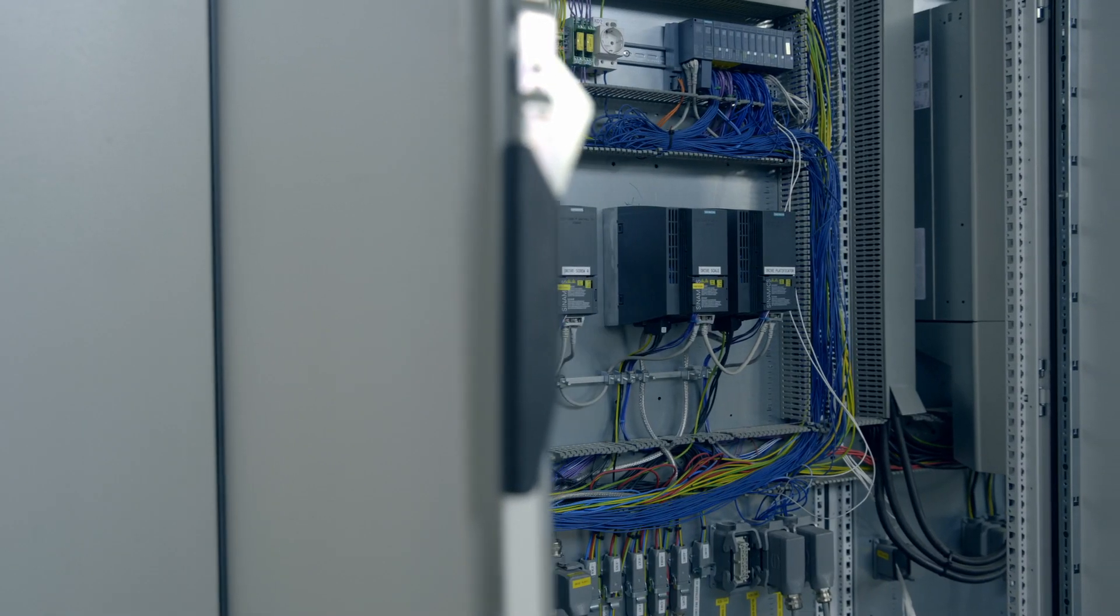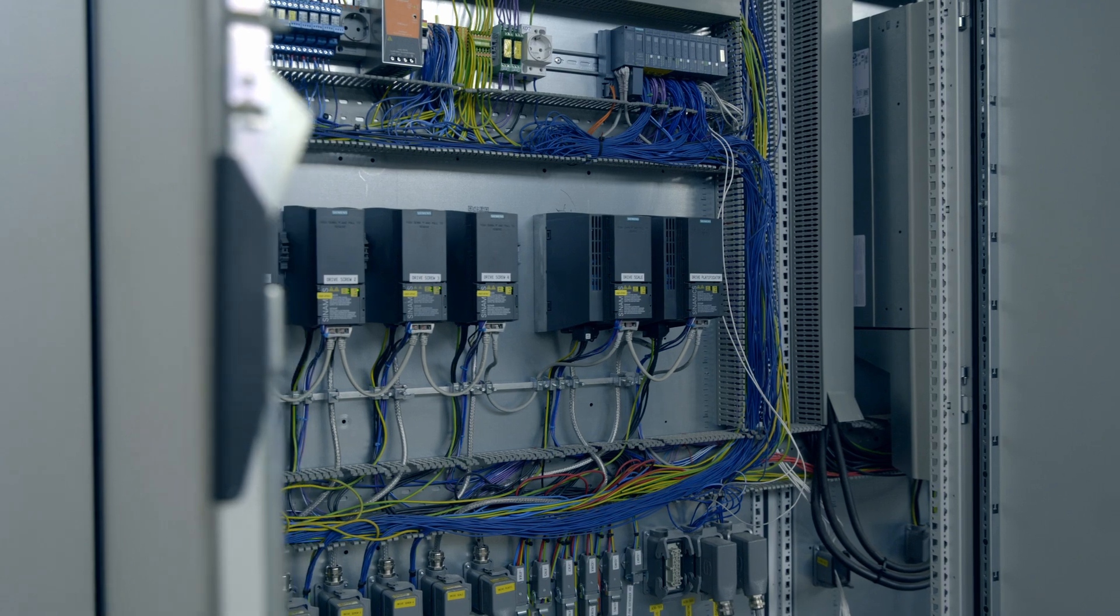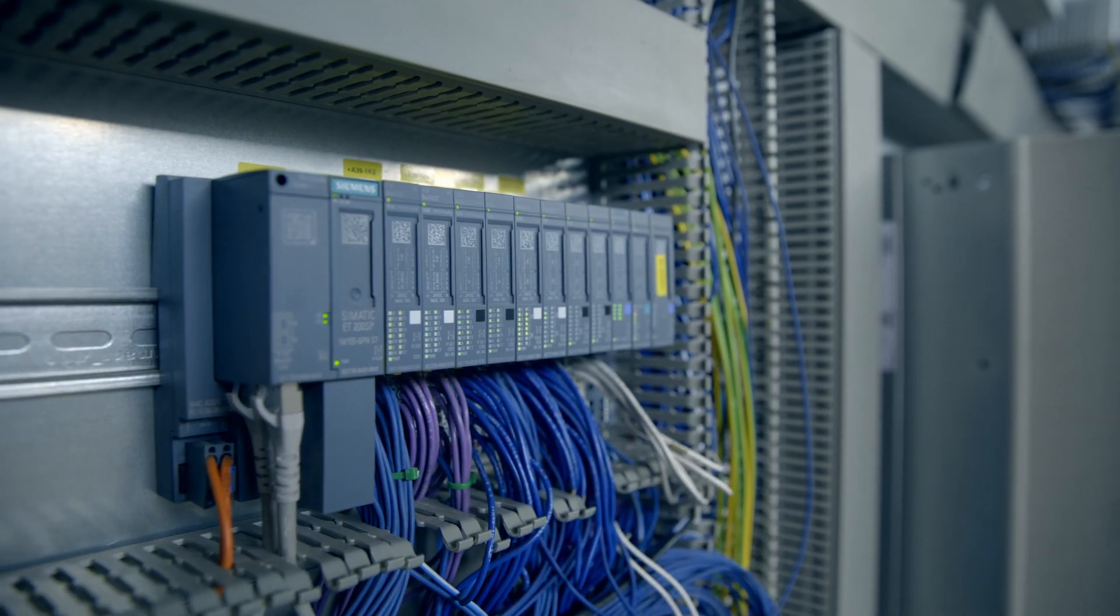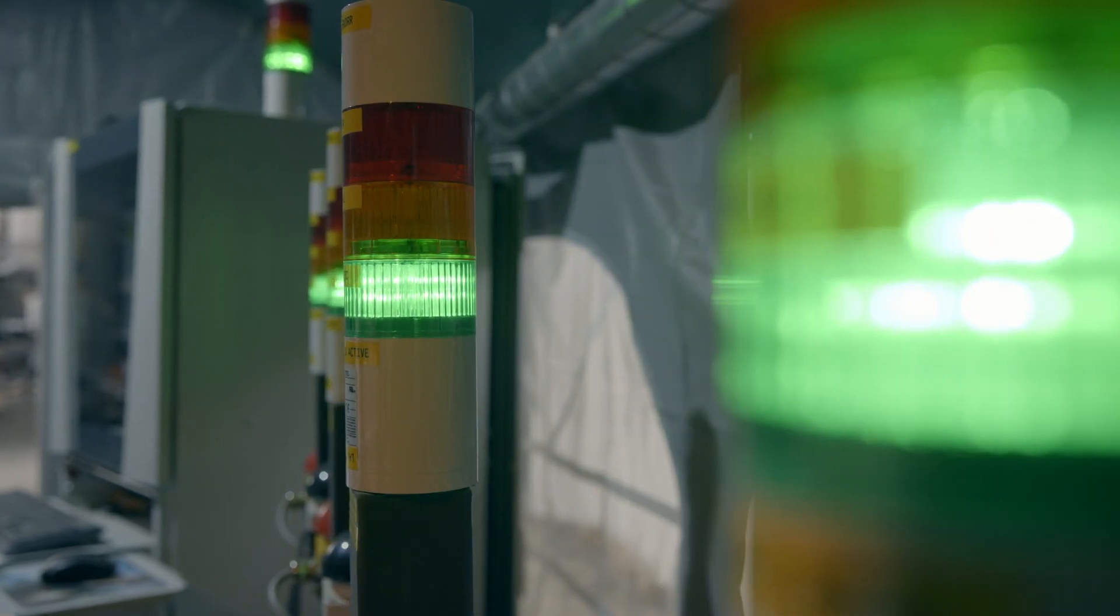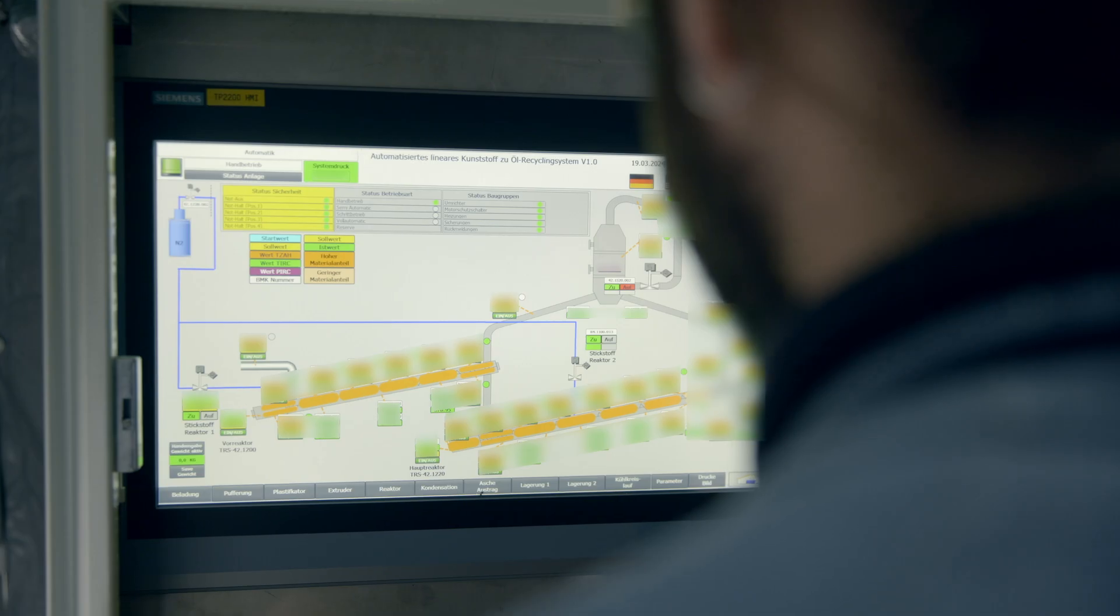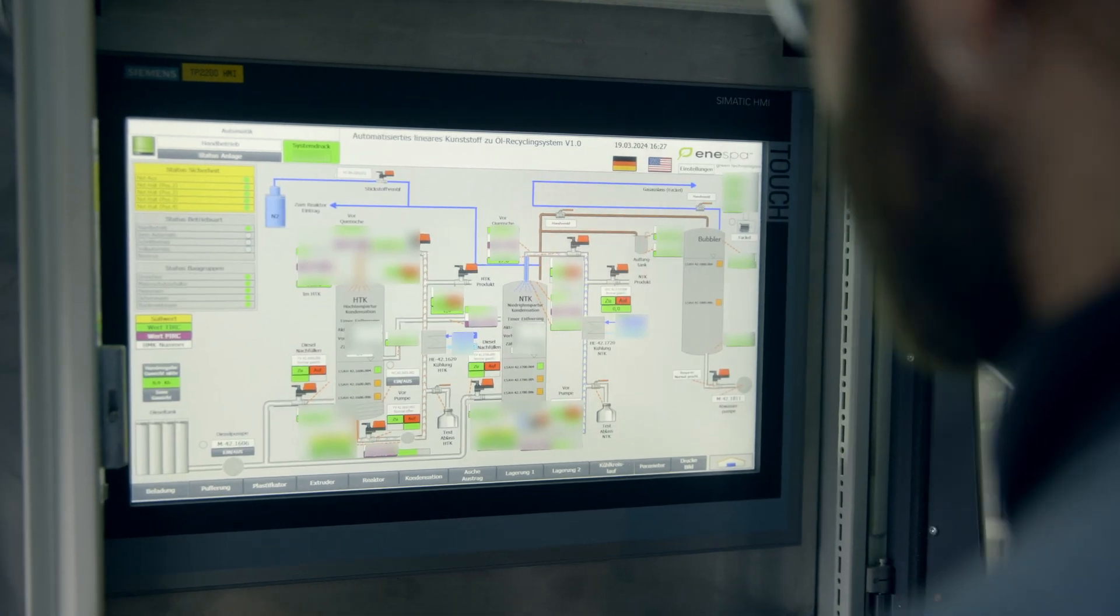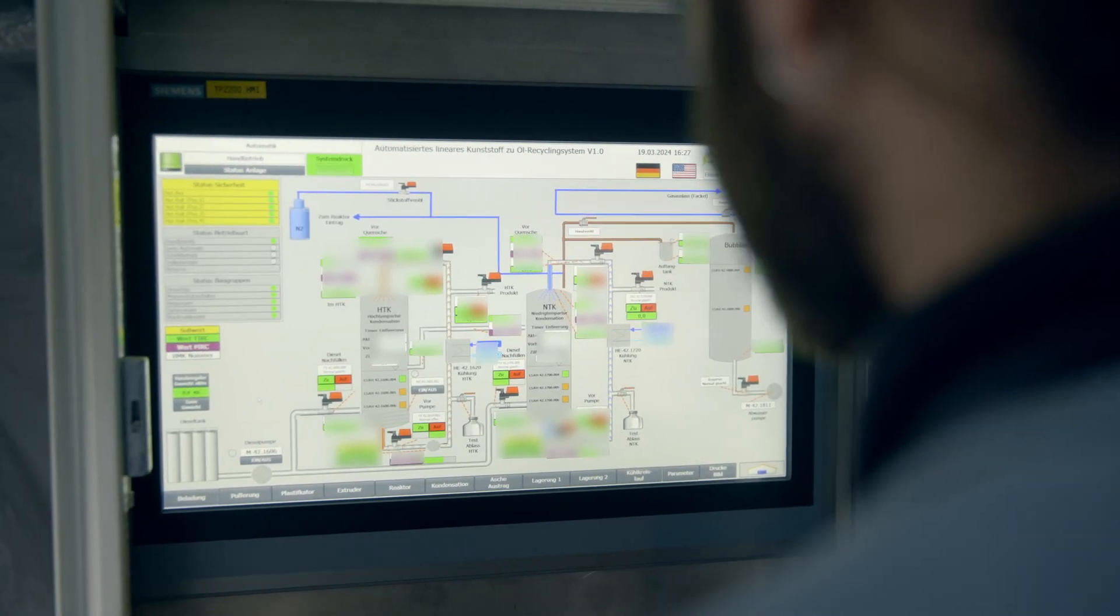Pressure measurements, circulating pumps, valves and much more are continuously monitored and recorded by a central process control system. All measuring points are rendered in graph form as simply as possible in order to maintain an overview of the process.